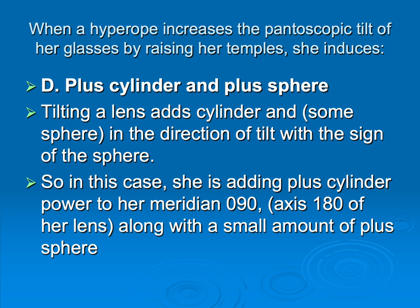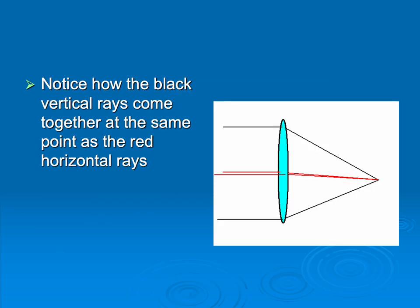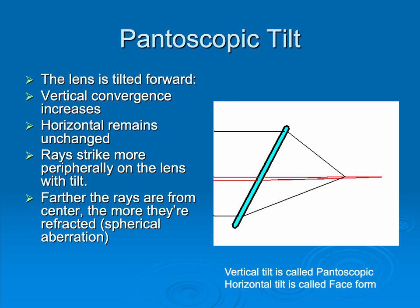So here is a lens with no pantoscopic tilt. The black vertical rays are bending just as much as the red horizontals. But if I have forward pantoscopic tilt, vertical pantoscopic tilt, now my vertical rays are going to converge sooner, more convergence being added here, than the horizontal rays. And you'll see a little note down there that horizontal tilt is technically called face form and only vertical tilt is pantoscopic. You don't have to remember that. Call it all pantoscopic tilt and everyone will know what you're talking about.